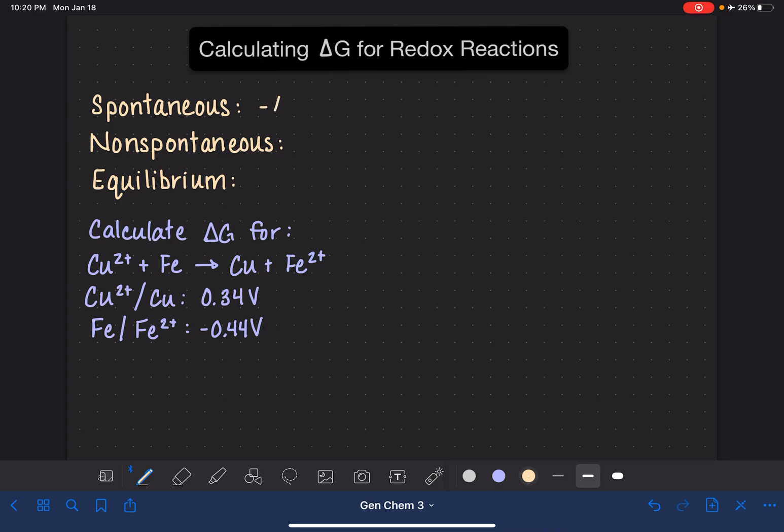For a spontaneous reaction, the value of delta G is always a negative number. Remember, a spontaneous reaction is one that takes place all on its own without any sort of external manipulation. A non-spontaneous reaction always has a delta G value that is a positive number. And when a reaction is in equilibrium, which means the rate of its forward reaction is equal to the rate of its reverse reaction, the value of delta G is always zero.